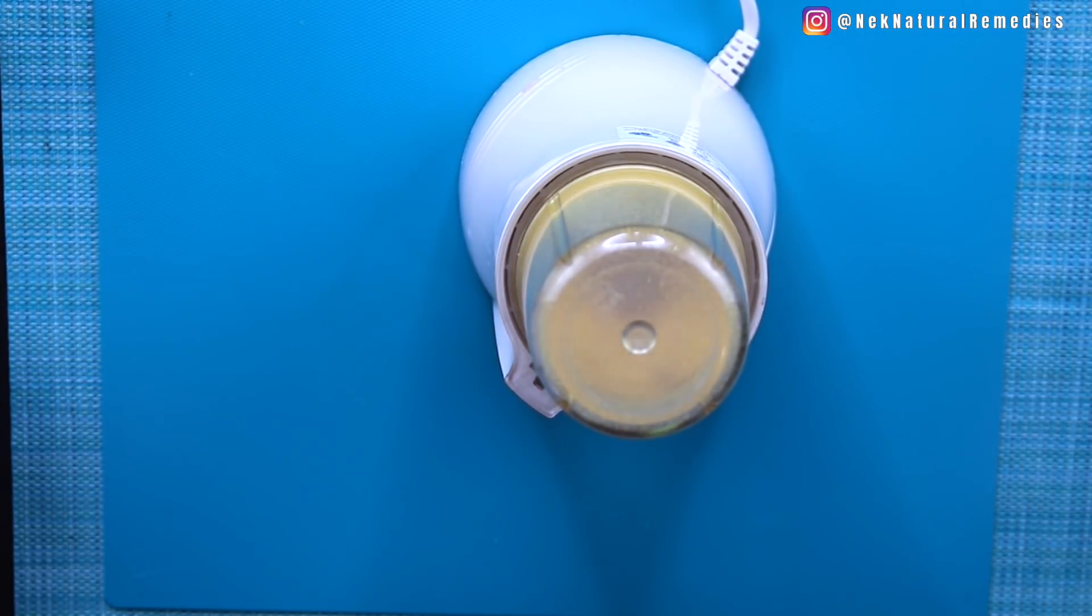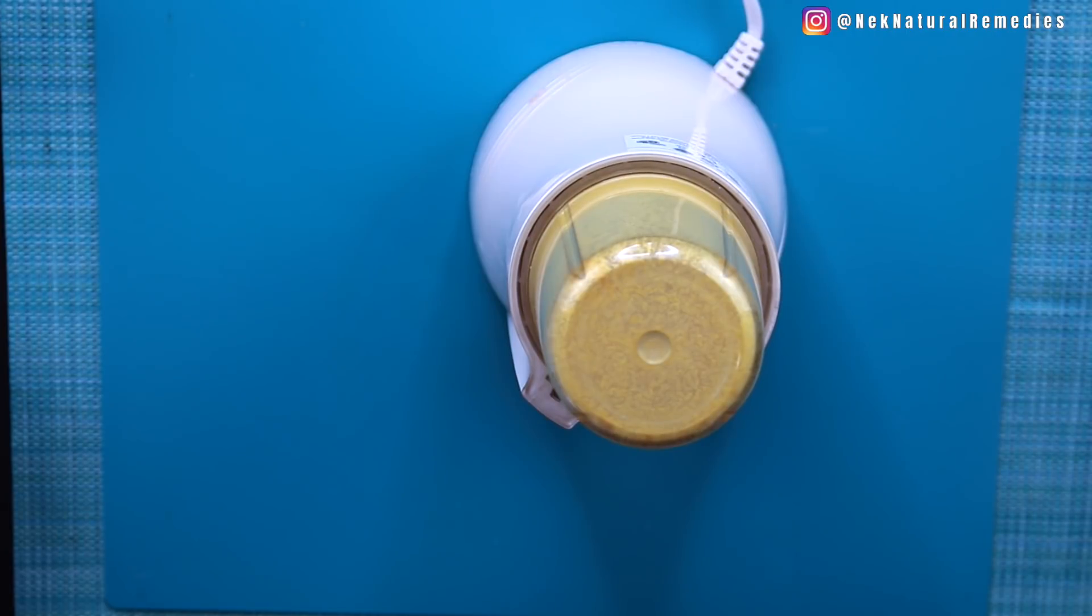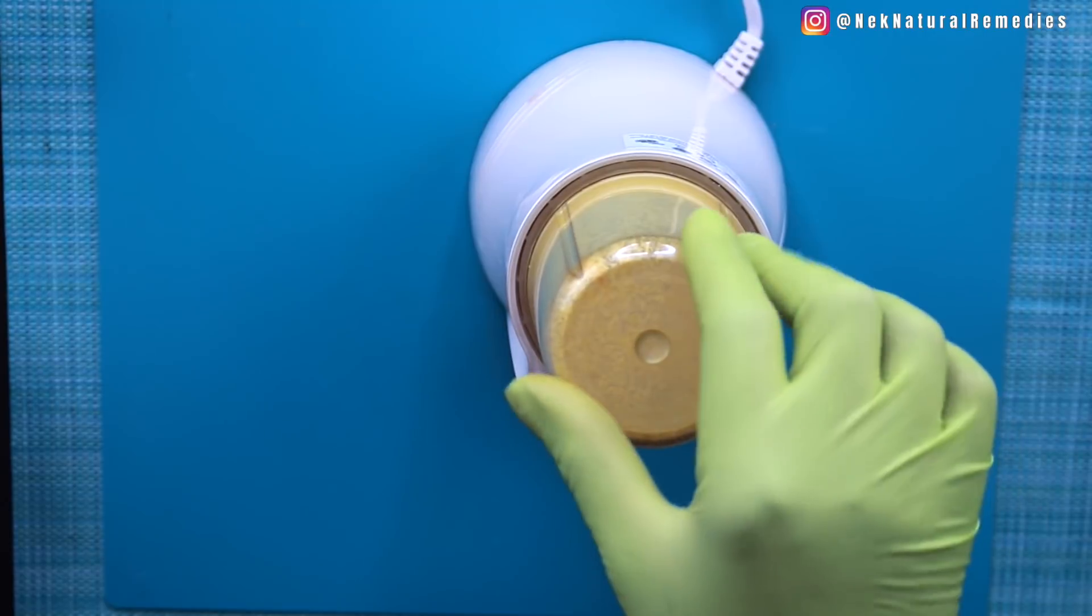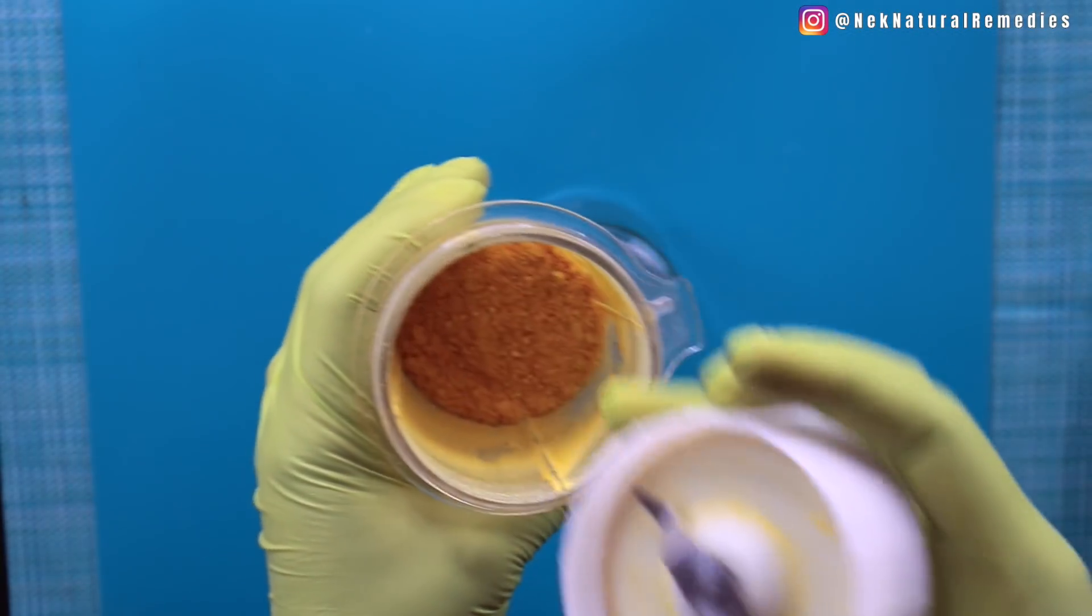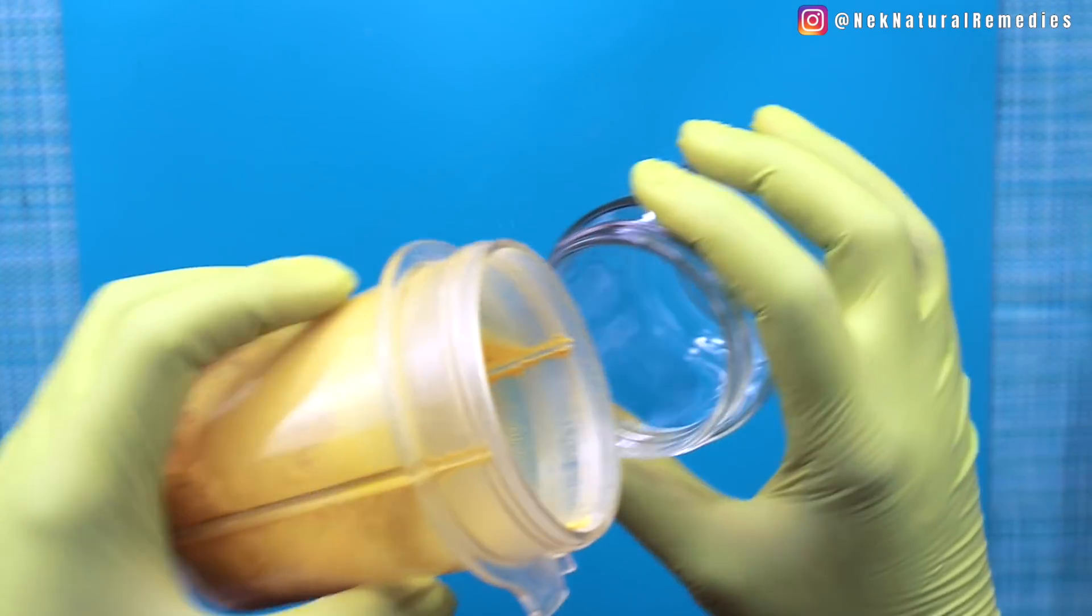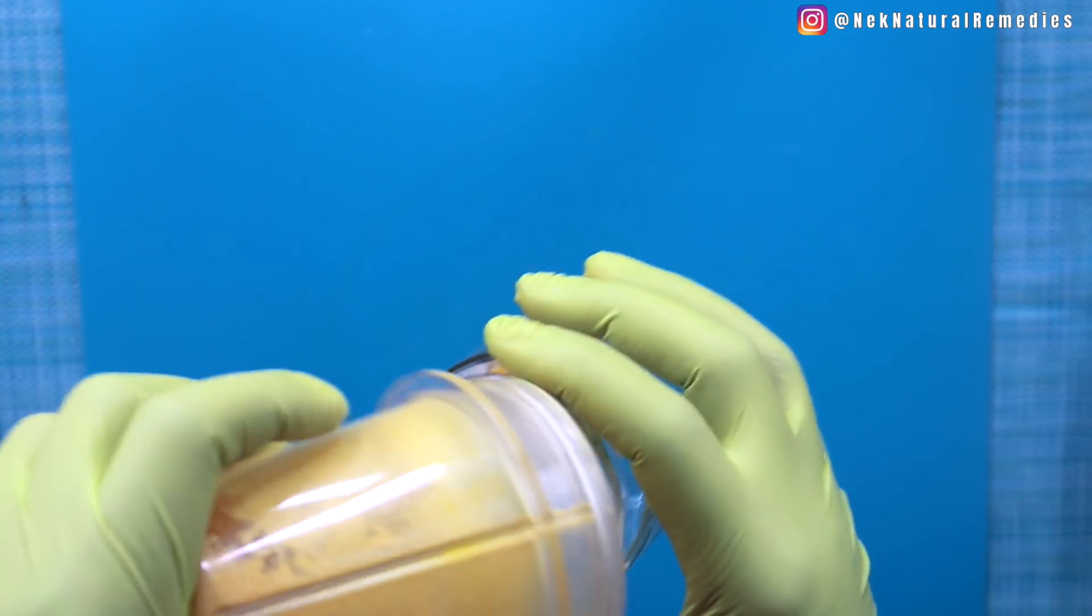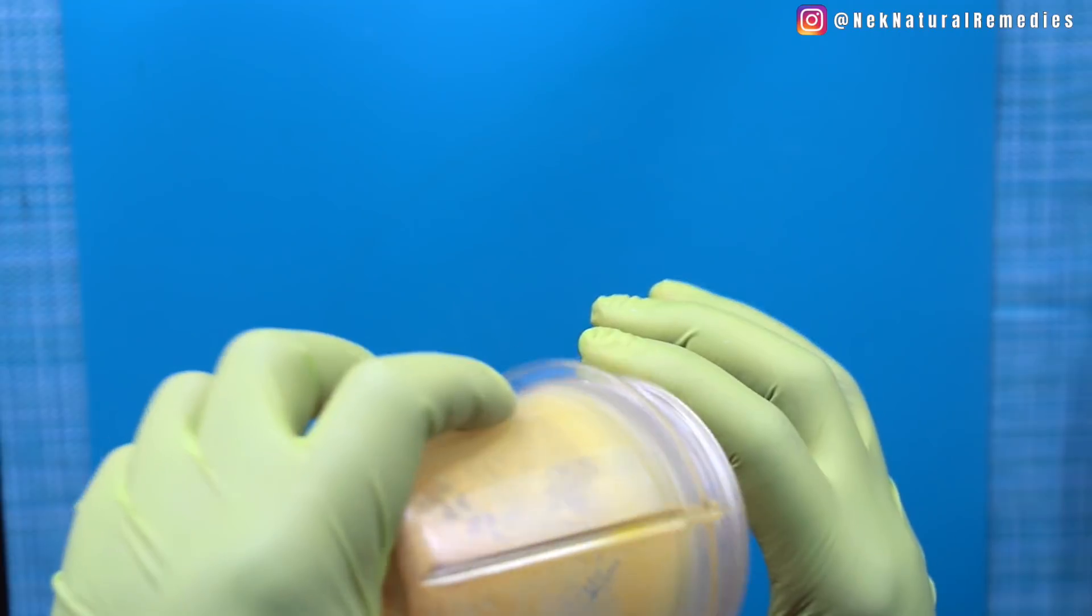So after blending, you're going to transfer it into an airtight container. I'm transferring it here because we are not going to use everything. You have to store the remaining for the next time you're going to make something that requires orange or orange and lemon peel.